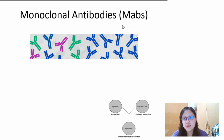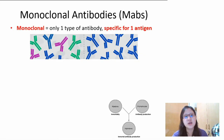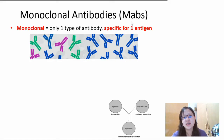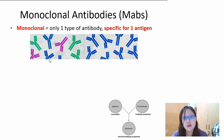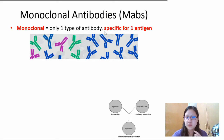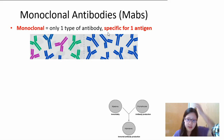These monoclonal antibodies are not what we are producing in our body. When we are producing antibodies in our body, it is specific for many antibodies — there are many, many antibodies produced at the same time, and each antibody is specific for one antigen. It's a mixture of many different antibodies. Monoclonal means only one type of antibody is produced in a huge bunch, and it's specific for one antigen only.